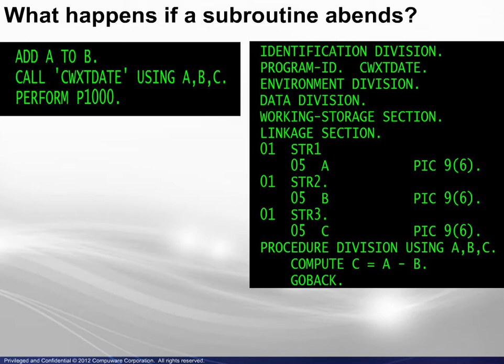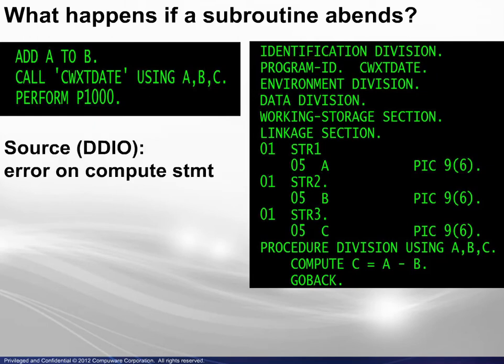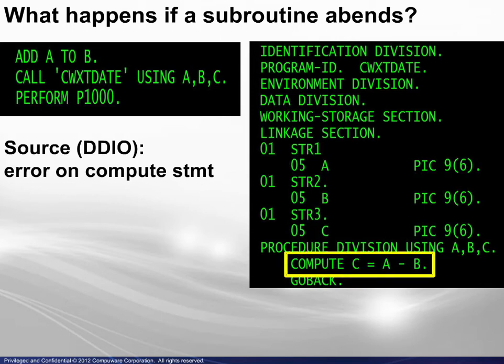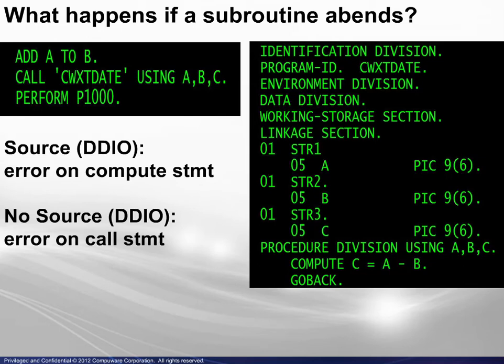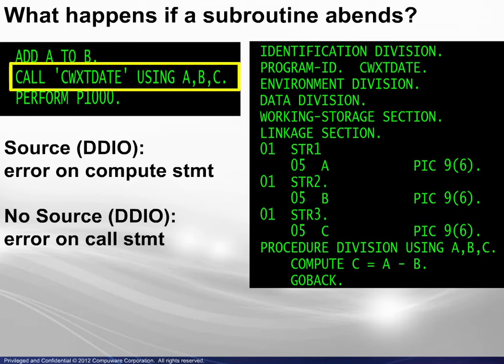In this example, the driving program issues a subroutine call. The subroutine name is shown in the call statement and in the program ID statement. If the source code for the subroutine does exist in the DDIO file, the processing will stop and the current execution pointer will be on the compute statement in the subroutine. If, however, there is no source code for the subroutine, the processing will stop and the current execution pointer will be on the call statement in the driving program.